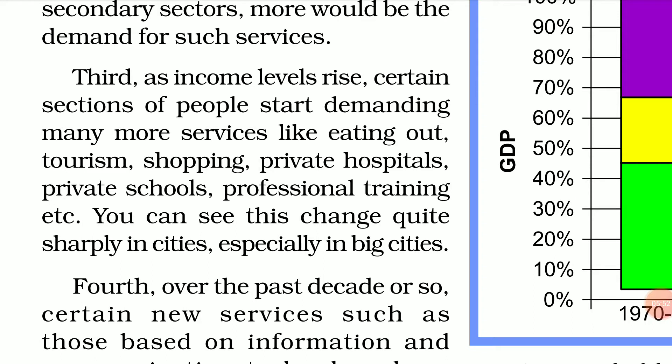Third, as income levels rise, certain sections of people start demanding many more services like eating out, tourism, shopping, private hospitals, private schools, professional training, etc. We see this change sharply in big cities. As India grew after independence, people started earning more and started looking for new kinds of services — they preferred private hospitals over public hospitals, and private schools. These demands for luxury also increased the demand for the tertiary sector.